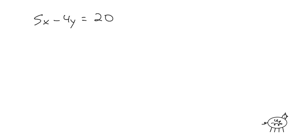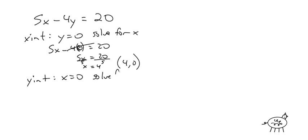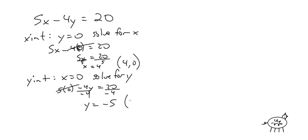Let's do another problem: 5x minus 4y equals 20. For the x-intercept, set y equal to 0: 5x minus 4 times 0 equals 20. That gives 5x equals 20, divide by 5, so x equals 4. The coordinate is 4, 0. For the y-intercept, set x equal to 0: 5 times 0 minus 4y equals 20. That gives negative 4y equals 20, divide by negative 4, so y equals negative 5. The coordinate is 0, negative 5.